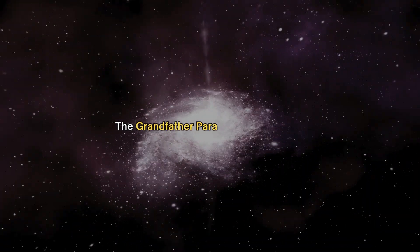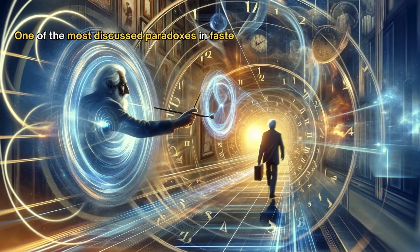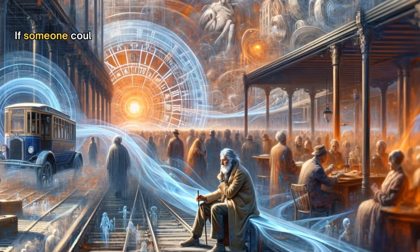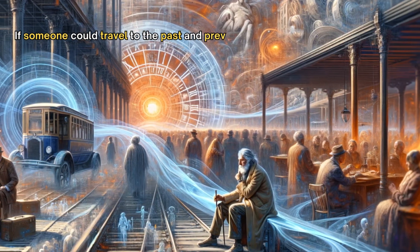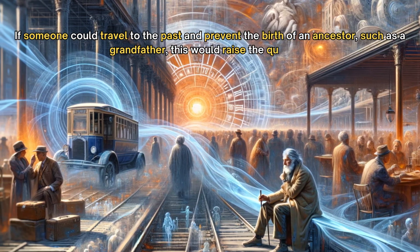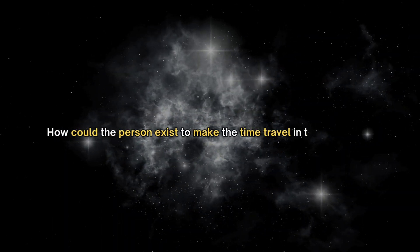The grandfather paradox and causality. One of the most discussed paradoxes in faster-than-light travel is the grandfather paradox. If someone could travel to the past and prevent the birth of an ancestor, such as a grandfather, this would raise the question: how could the person exist to make the time travel in the first place?